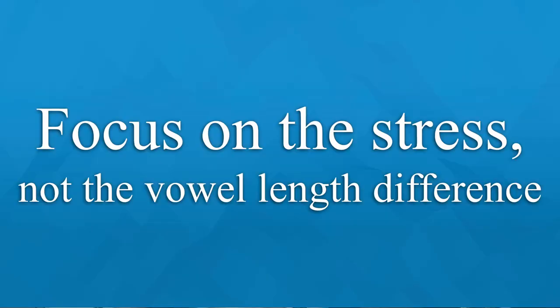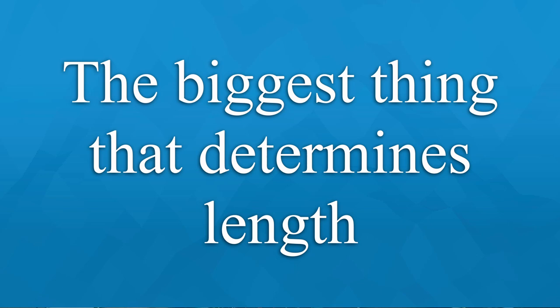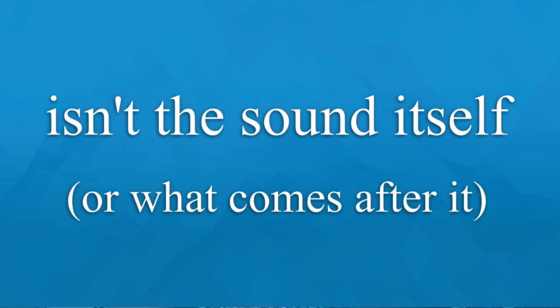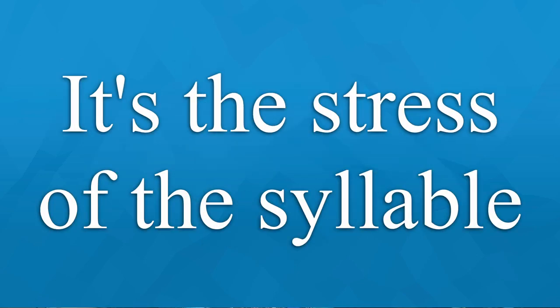The point is: focus on the stress, not some vowel length difference — stress is also the core of the rhythm. It doesn't matter what sound it is. You can have a long E in a stressed or unstressed syllable. You can have a short I in an unstressed or stressed syllable. The biggest thing that determines the length isn't the sound itself — it's the stress of the syllable. Don't get caught up in small technicalities; focus on what's going to give you the biggest results, which is the stress and consequently the rhythm.